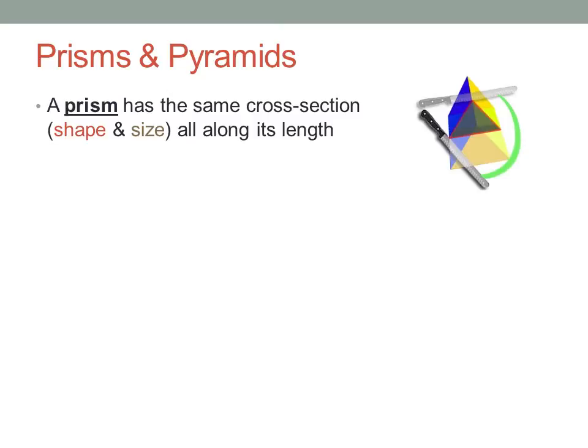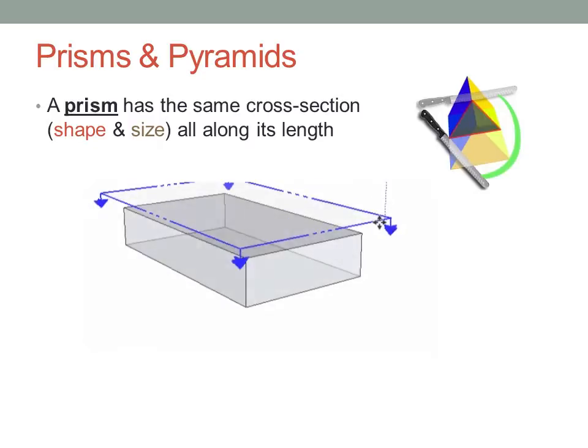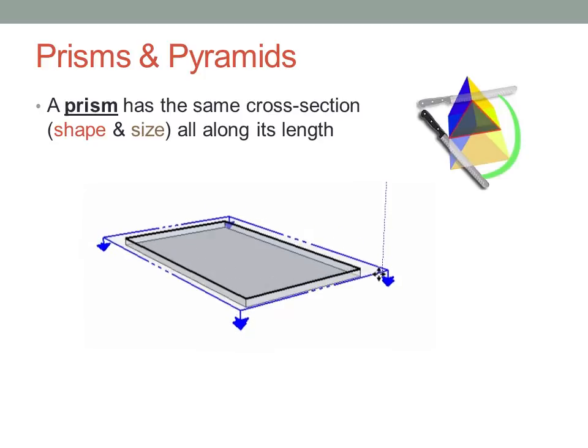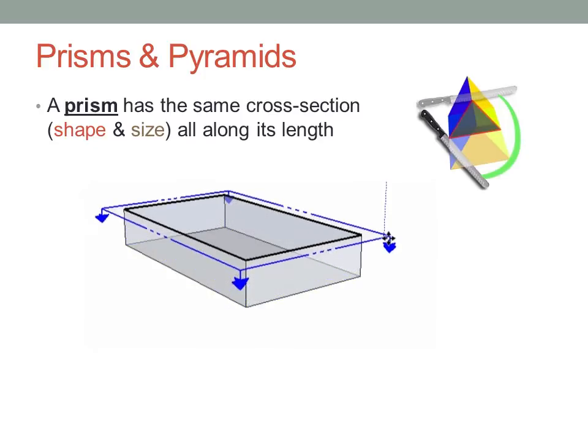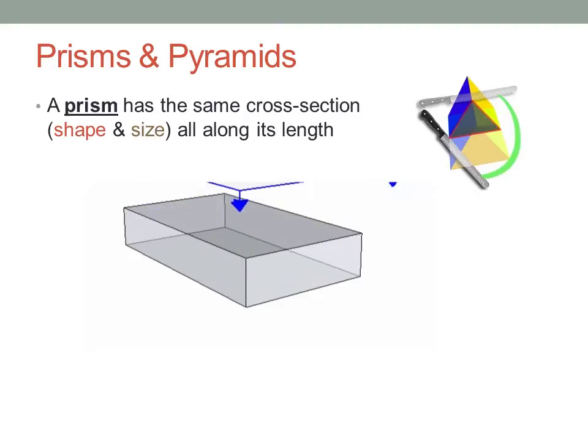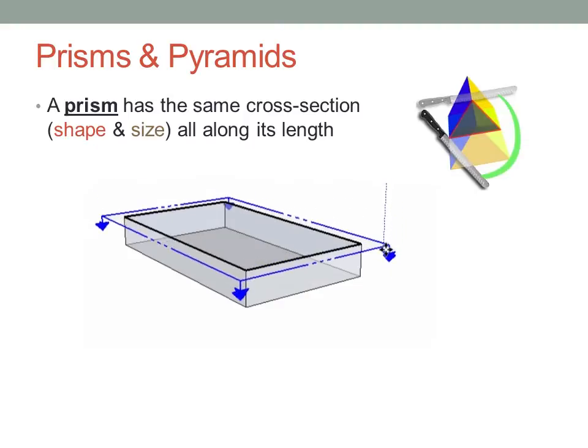A prism is a solid shape with a flat base that keeps the same cross-section all the way through its length. If you take a cross-section parallel to the base, wherever you look along the prism, you'll see exactly the same shape and size all the way along.